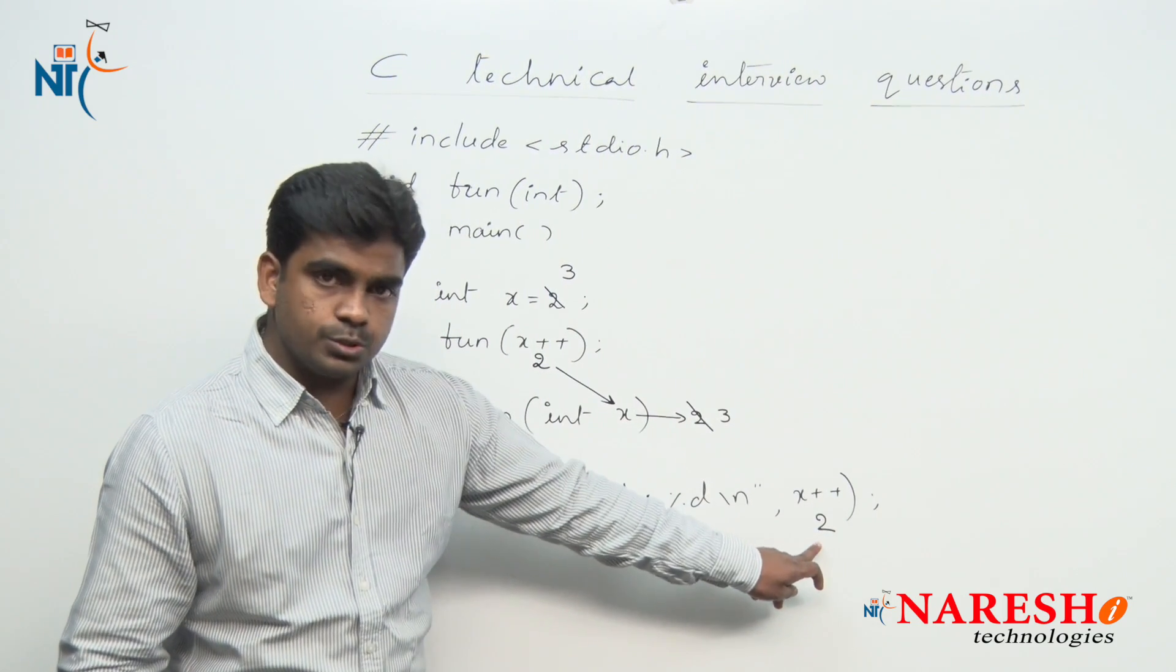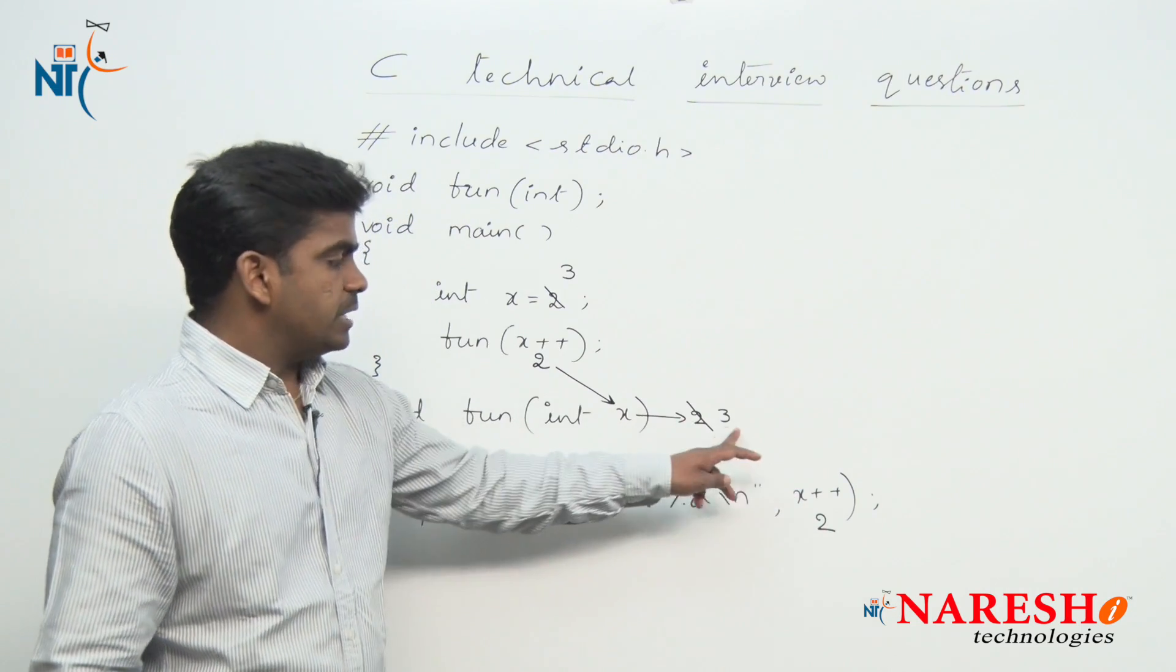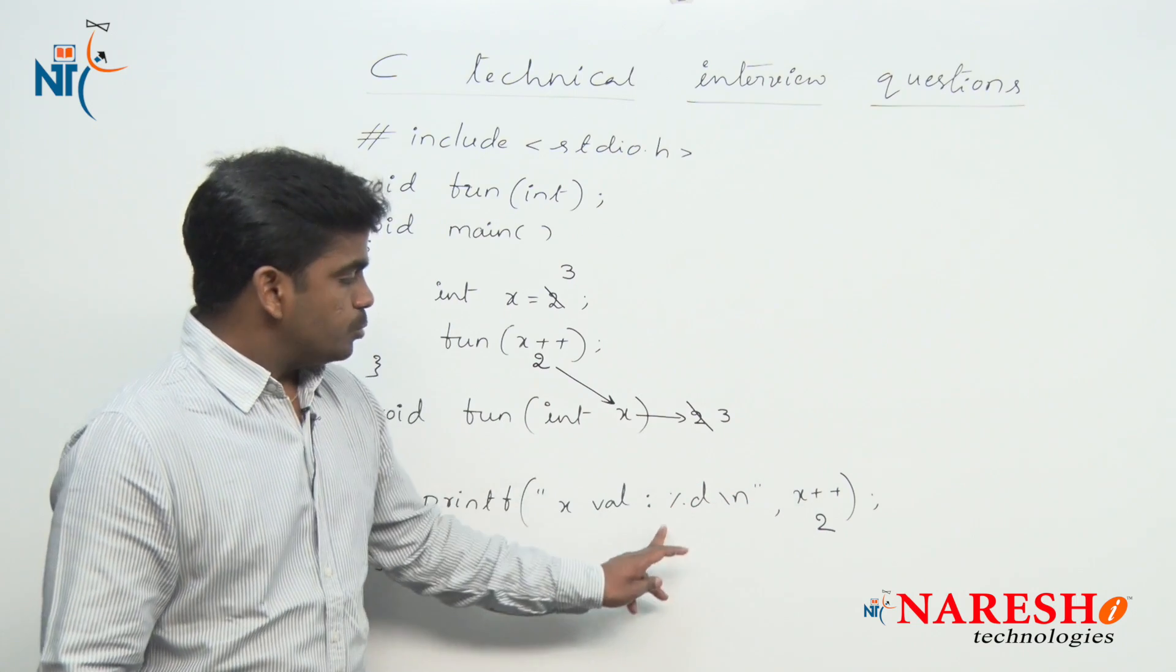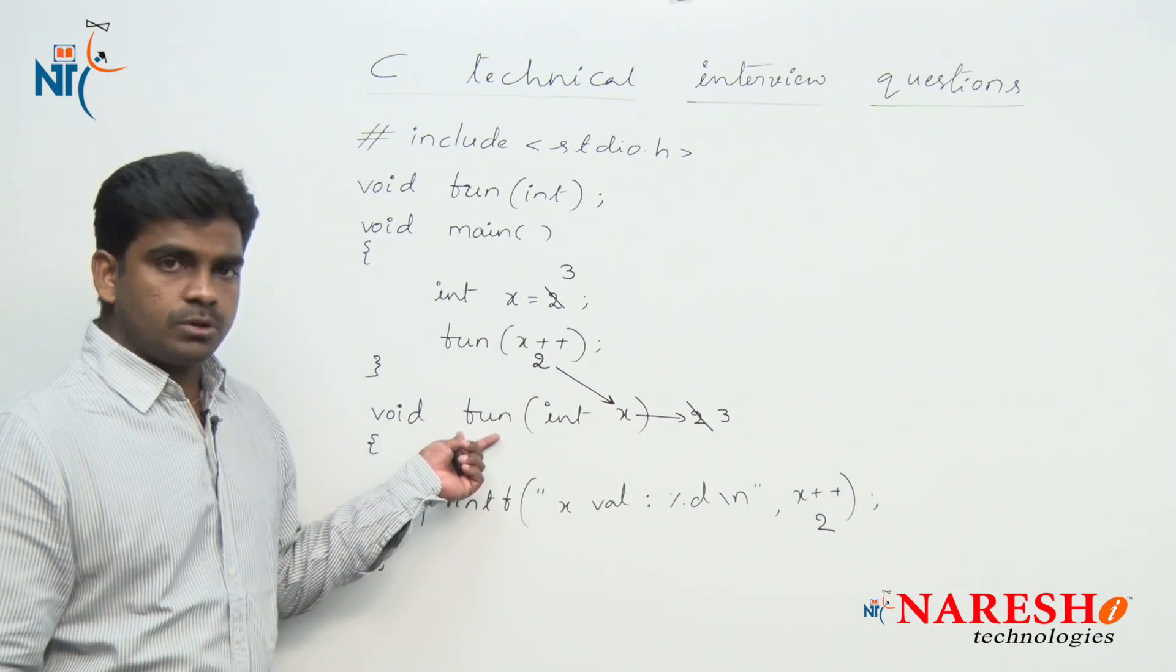But what is the substituted value is 2, so it will print the value 2 only. Later the value becomes 3. Here x value is 3 and here x value is 3, but output of this program is 2.